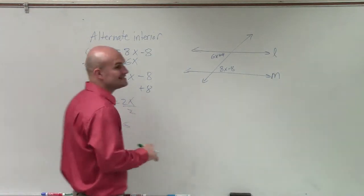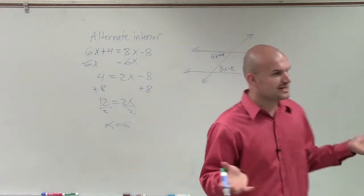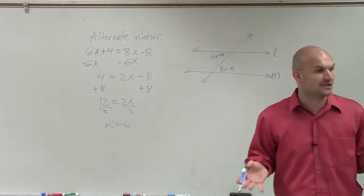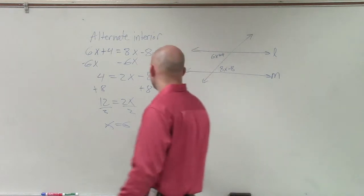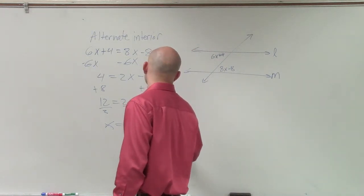So what that means is when x equals 6, my alternate interior angles are equal in value or equal in measure. Therefore, L is parallel to M.